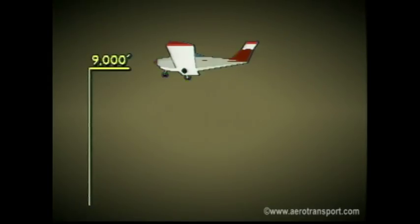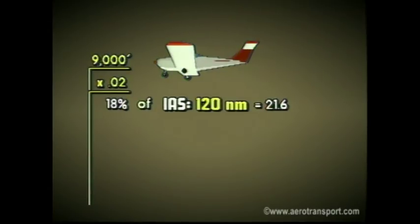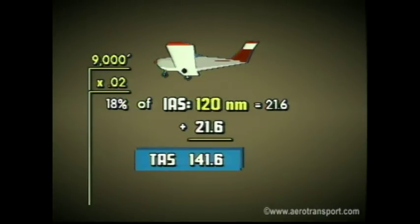For example, you are flying at 9,000 feet with an indicated airspeed of 120 knots. To correct the error, multiply 9,000 by 2%, which equals 18%. Now take 18% of 120 knots, which equals 21.6. Then add this value to the indicated airspeed of 120 knots to arrive at the true airspeed of 141.6 knots.